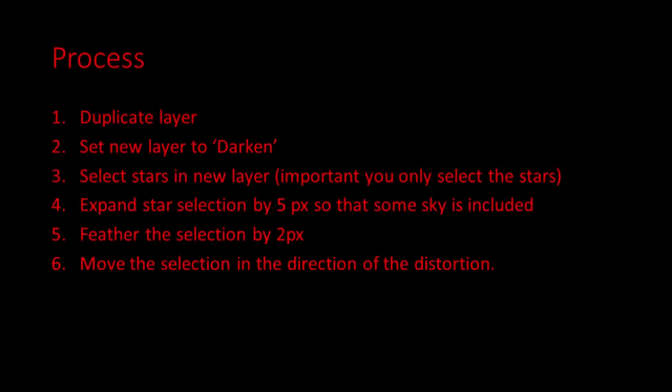So here's the whole process. Duplicate your image as a layer. Set the new layer to Darken. Select the stars in the new layer — it's important you only select the stars. Expand the star selection by 5 pixels so that some of the sky is included. Feather the selection by 2 pixels to smooth things a little bit. Then move the selection in the direction of the distortion, and this will fix your stars.